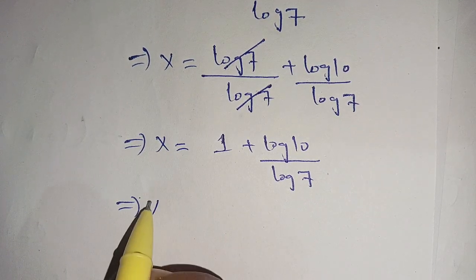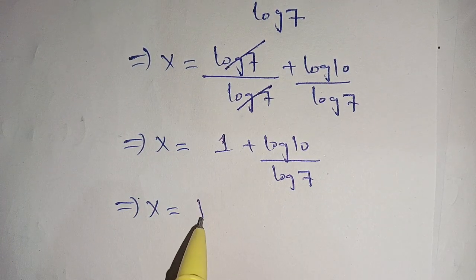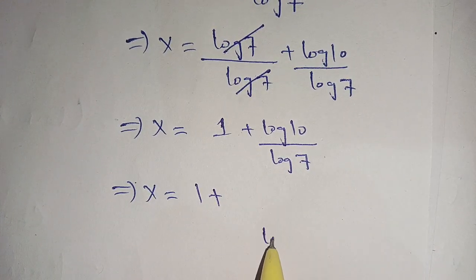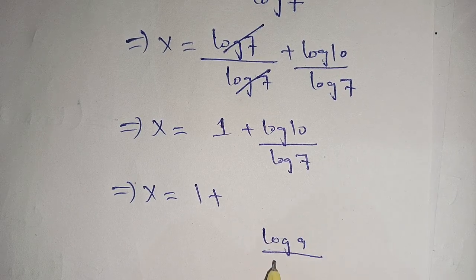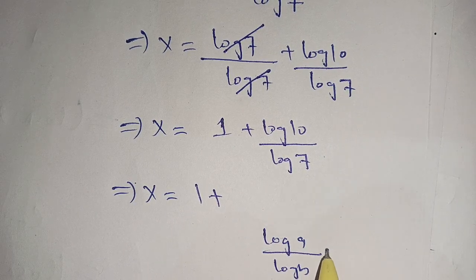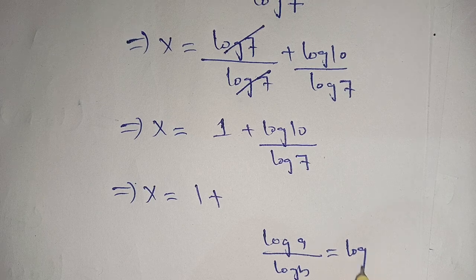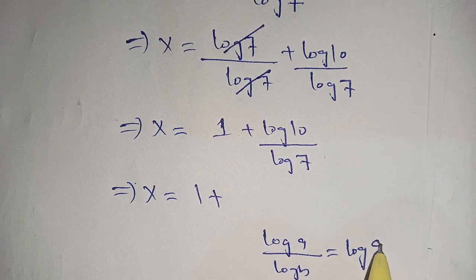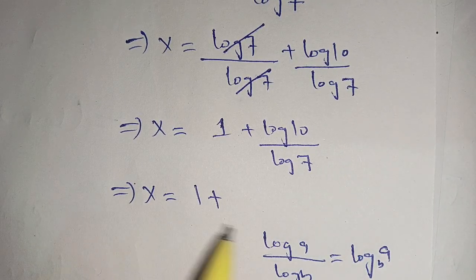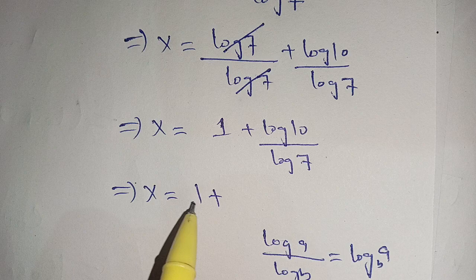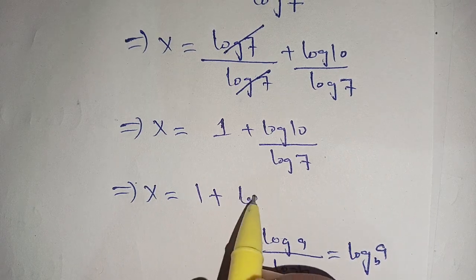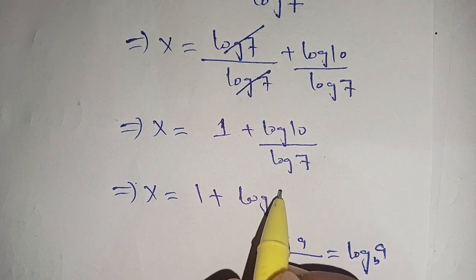We know that log of a divided by log of b is equal to log of a with base b. Using this change-of-base identity, we get x is equal to 1 plus log of 10 with base 7.